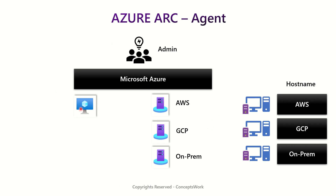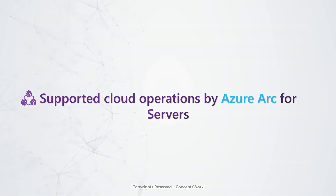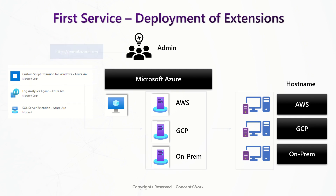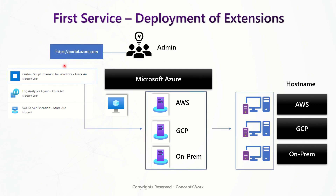Once onboarding is done and the Azure Arc agent is installed, let's talk about the services or cloud operations which are offered. In the official documentation these are listed as cloud operations supported by Azure Arc for Servers. The first one is deployment of extensions. The image on the left lists the set of extensions that can be deployed to an Azure Arc machine — one that you have onboarded from your on-prem, GCP, or AWS platform.